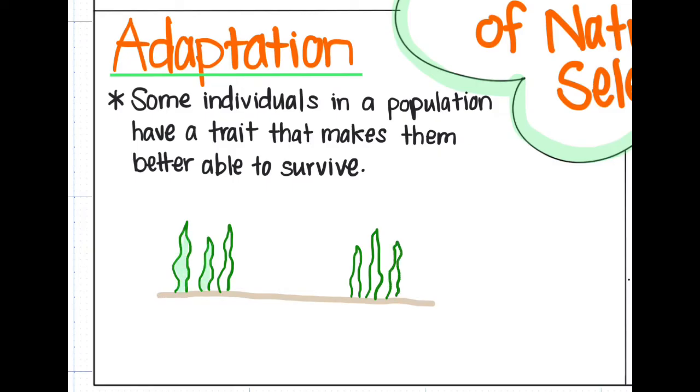For example, if a bunny is born with the ability to run faster than the other bunnies, it is better adapted to survive because it can escape wolves and other predators better than the other bunnies.